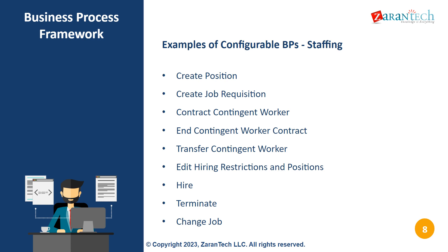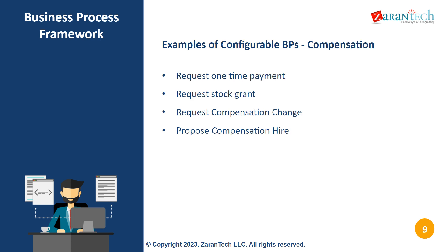Here are some examples of commonly used configurable business processes in Workday. For staffing: create position, create job requisition, contract contingent worker, transfer contingent worker, edit hiring restrictions and positions, hire, terminate, and change job. For compensation: request one-time payment, request stock grant, request compensation change, and propose compensation for hire.